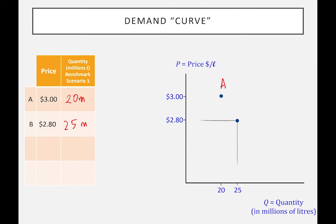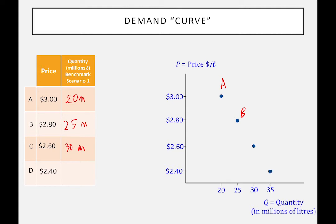I show that on my graph at $2.80 and 25 million — call this point B. Then I do the experiment again at $2.60, and by the same logic the number rises to 30 million. I mark that dot. Then a fourth time at $2.40 — call this point C, or point D — and I get 35 million. I can now draw a line through these four points, and we call this a demand curve. It's actually a line, but in economics we often call lines 'curves.' I label this demand curve number one.